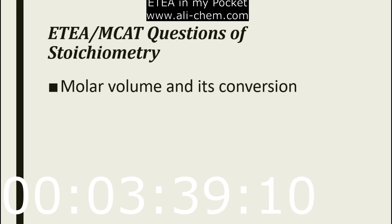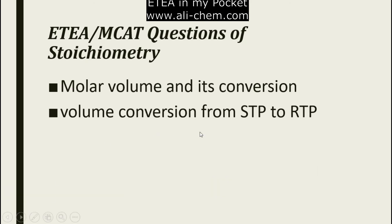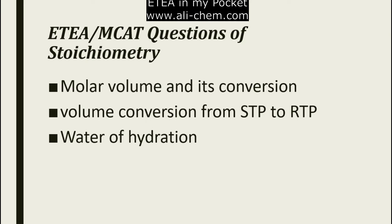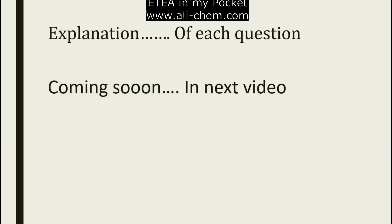The next question type is molar volume — converting volume to number of moles — and volume conversion from STP to RTP. Sometimes they give you a value at STP and ask you to convert it to RTP. Another question type is water of hydration. There are also questions on percent yield — what is percent yield, actual yield, and theoretical yield, what is the difference between these, and how to calculate them. Explanations for each question type will be given in the next video.